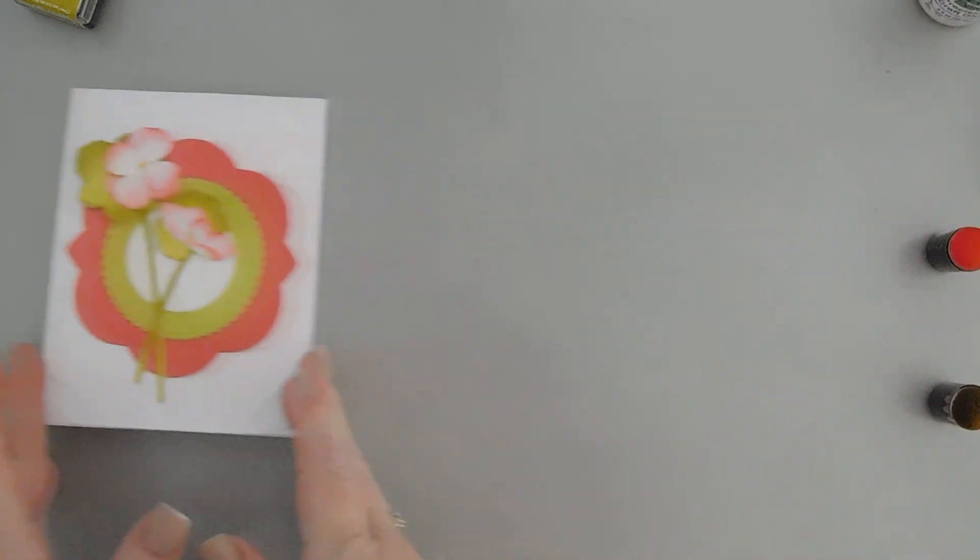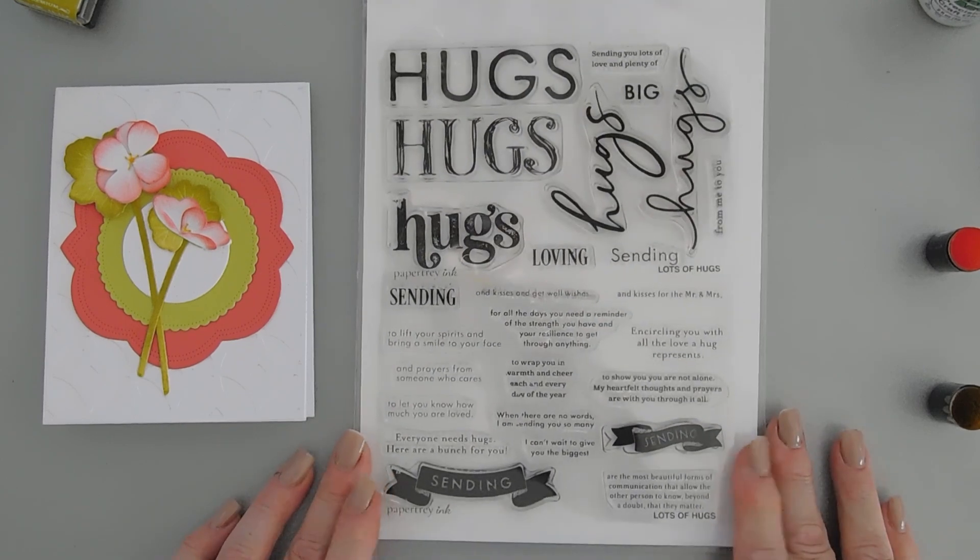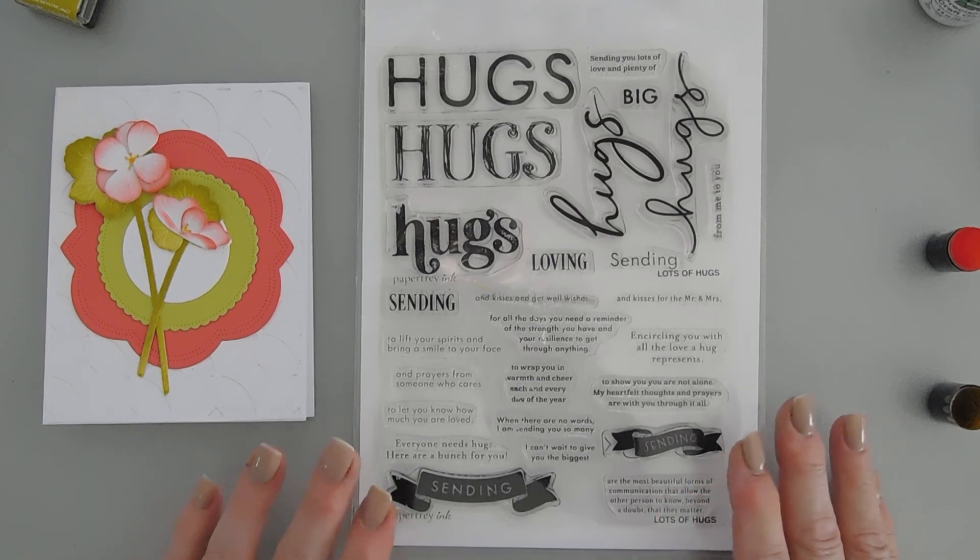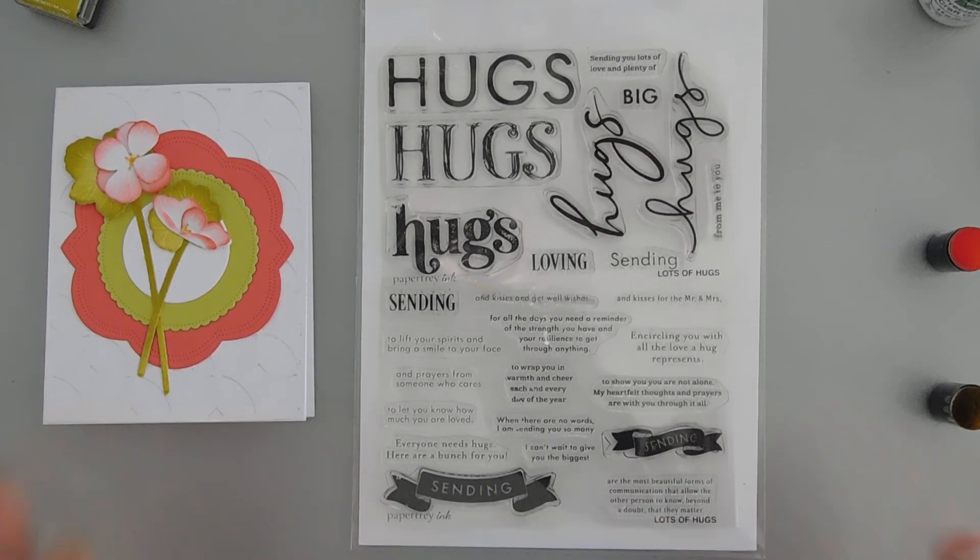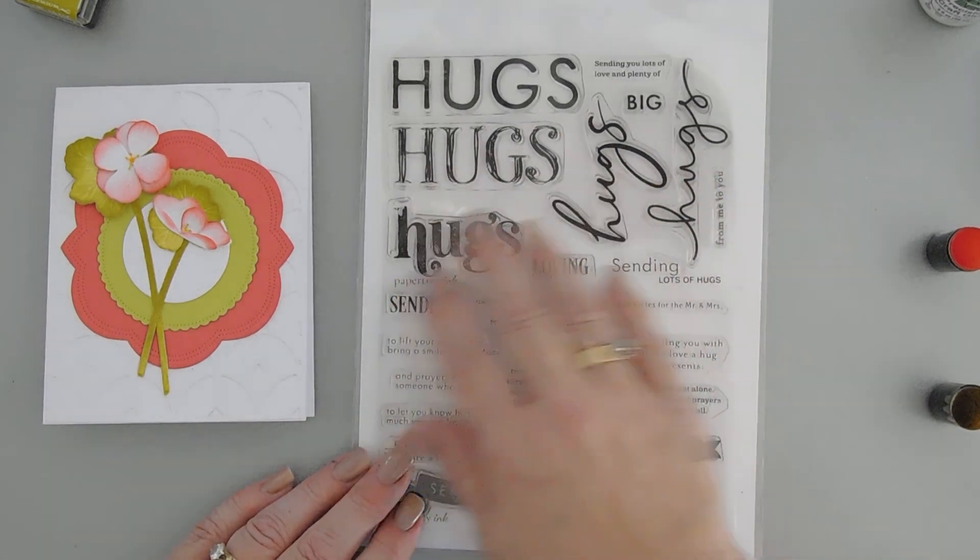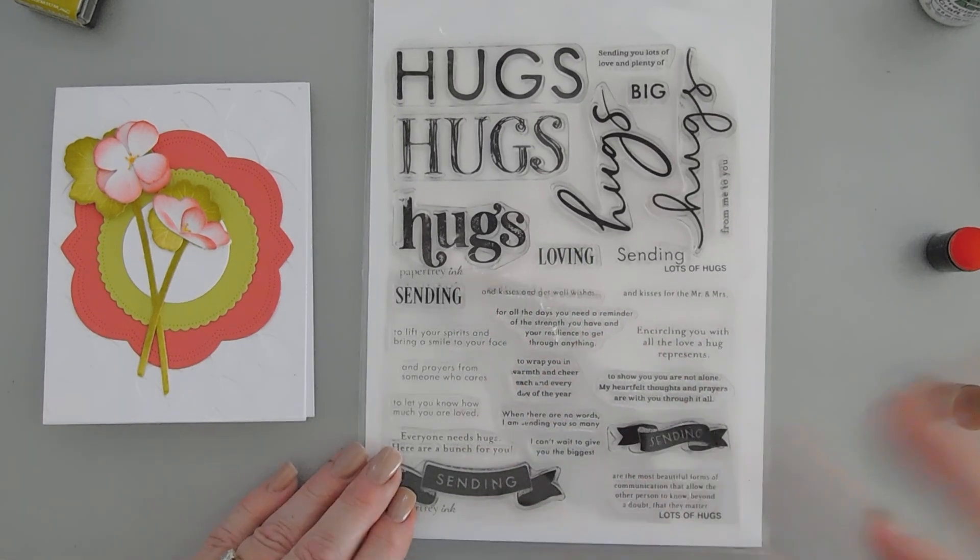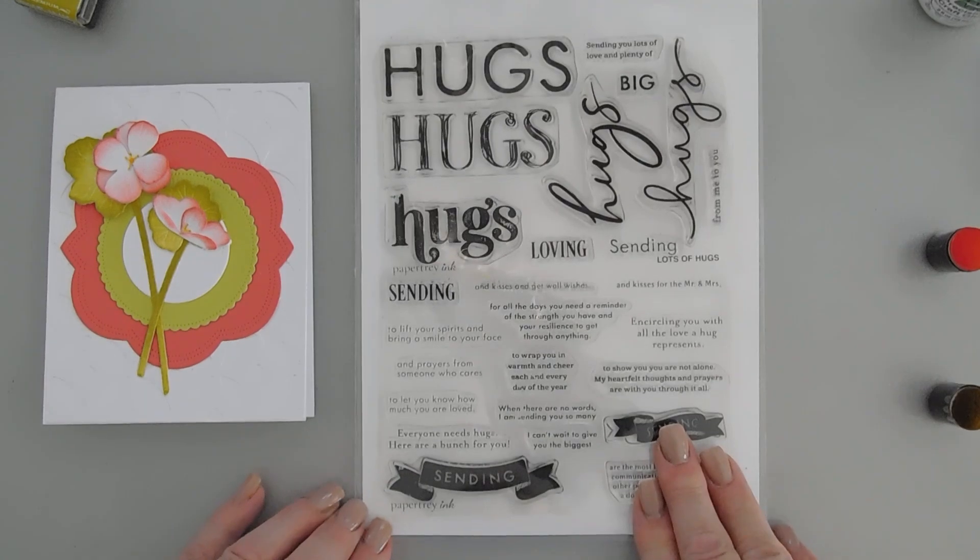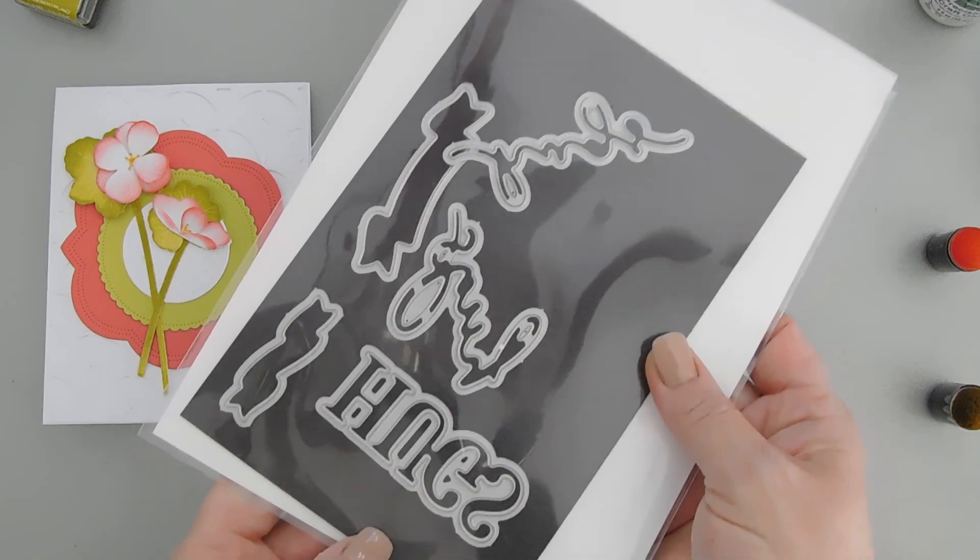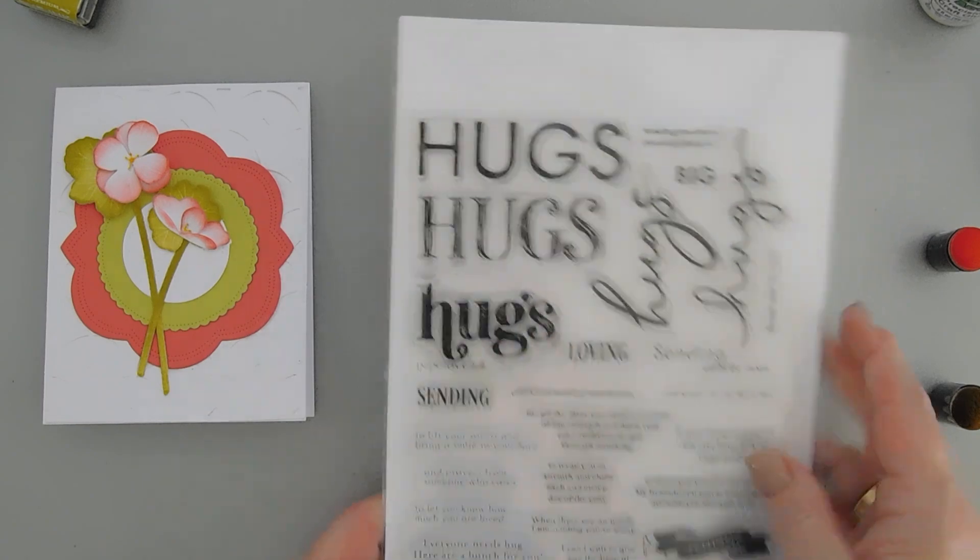Now we need a sentiment. So for that, I'm bringing in my Lots of Hugs stamp set. Love this stamp set. If you guys are looking for a nice sentiment stamp set that has hugs, this is perfect because you have all the big scripty block letters, so many different size hugs. But then you also have sentiments that go with it that you could add on the inside, outside, and then you have some banners too. I just love this set. It does have a coordinating die set to go with it.